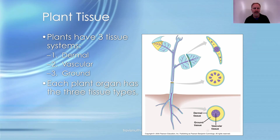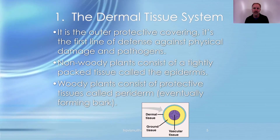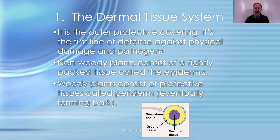Plants have three basic tissue systems: dermal, vascular, and ground. Each plant organ has all three types of these tissues, just arranged a little differently. The dermal tissue is the outer skin of the plant — it protects against water loss, physical damage, and pathogens.